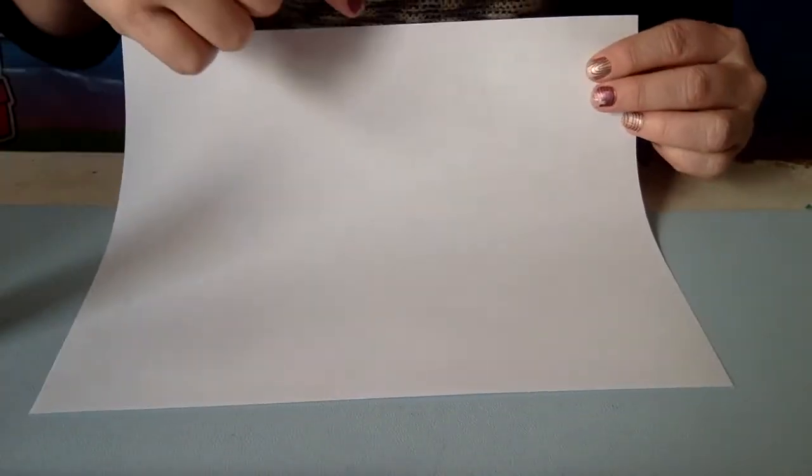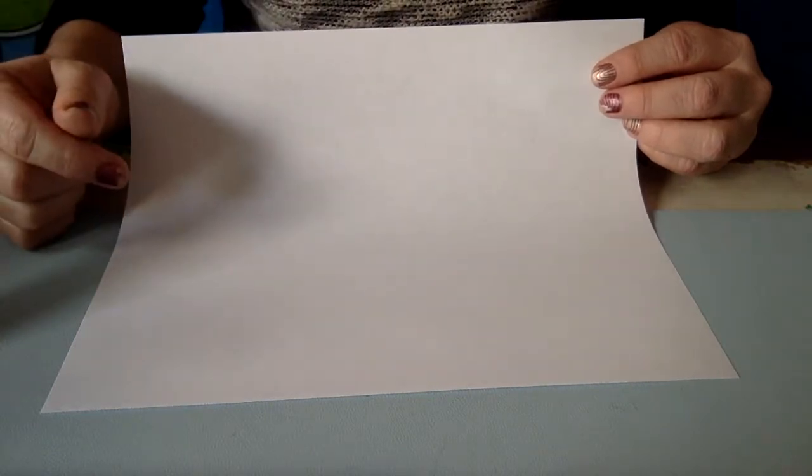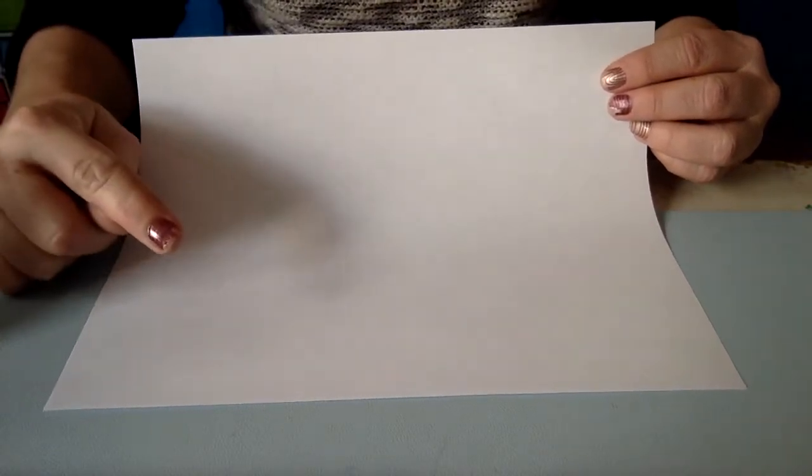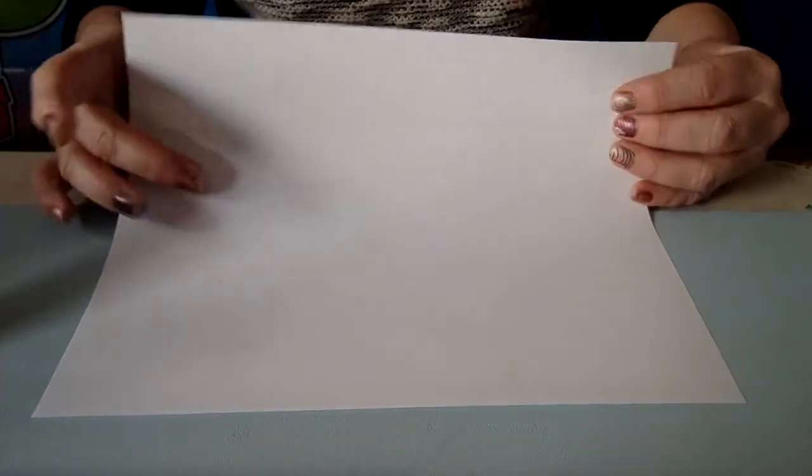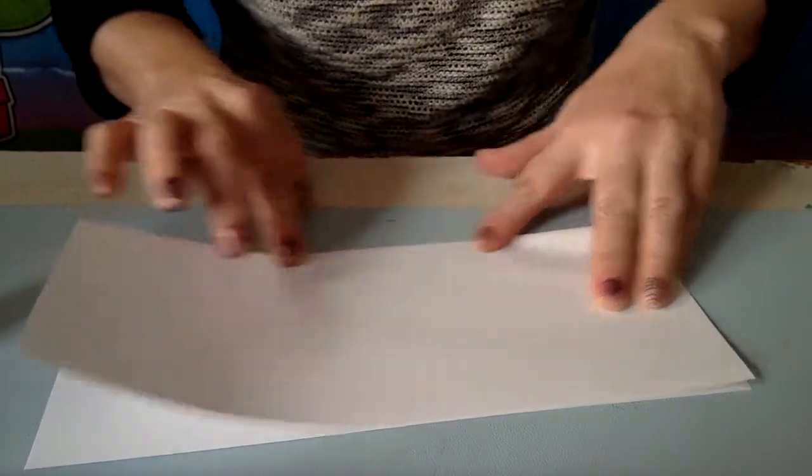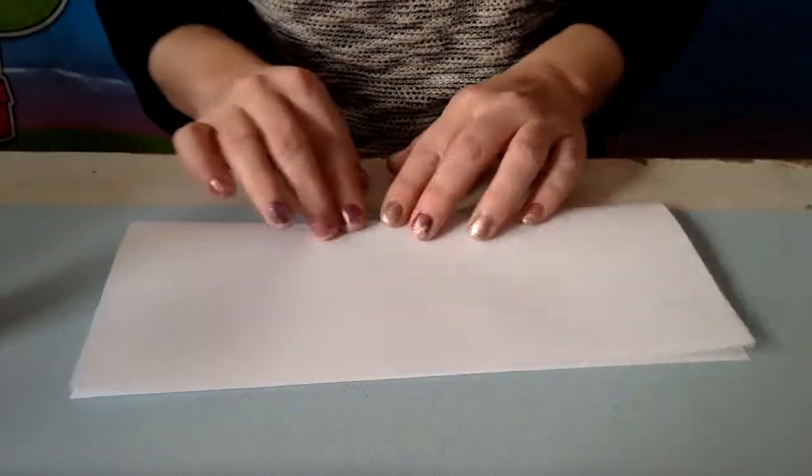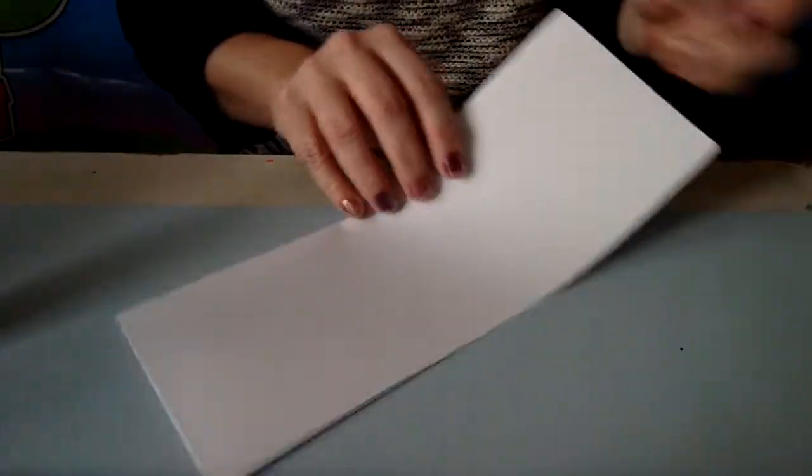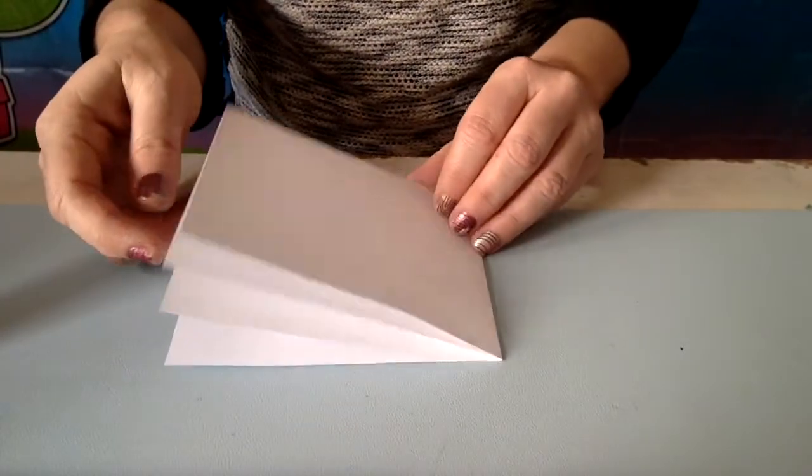We're gonna fold this paper to mark where we're going to cut it. You're gonna fold it in half two different ways. Fold it in half one way, it doesn't matter if it's the long way or the short way, and fold it in half one more time. This way we'll know where to cut.